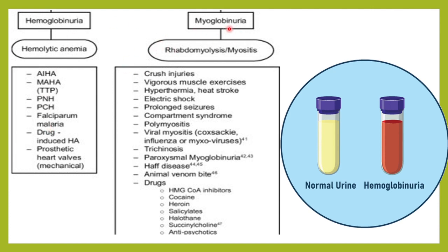Then there is myoglobinuria — myoglobin is a protein present in the muscles. Whenever there is muscle lysis, called rhabdomyolysis, the muscles are lysed and this protein is excreted in the urine, or there is infection to the muscle, myositis or inflammation. For example, crush injury, road traffic accident, vigorous muscular exercise, heat stroke, electrical shock, prolonged seizures, polymyositis, viral myositis, or certain drugs can all cause myoglobinuria.